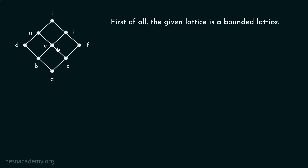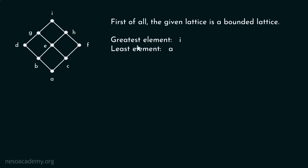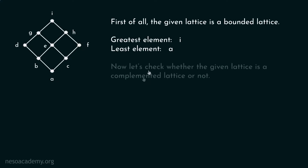You can verify that the greatest element is I and the least element is A. The greatest element is I because every element is related to it, and A is the least element because it is related to every other element. So this particular lattice is a bounded lattice.